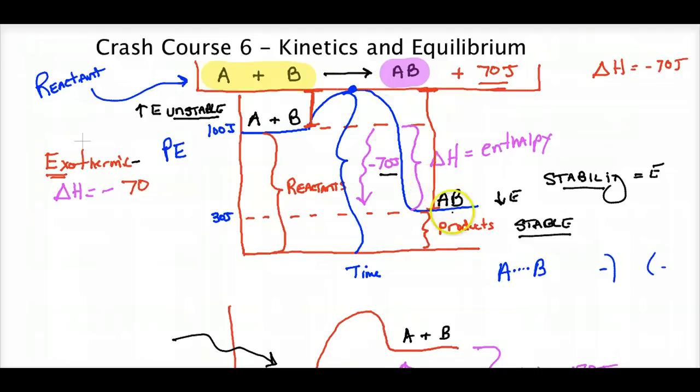Activation energy is like climbing a slide — you've got to get to the top before the reaction goes. The forward activation energy is from the reactants to the top of the hill. In the reverse reaction, there's a lot more activation energy because we're dealing with something stable — something stable needs a lot of energy to become unstable. Delta H or enthalpy is the difference of where you start and where you finish.